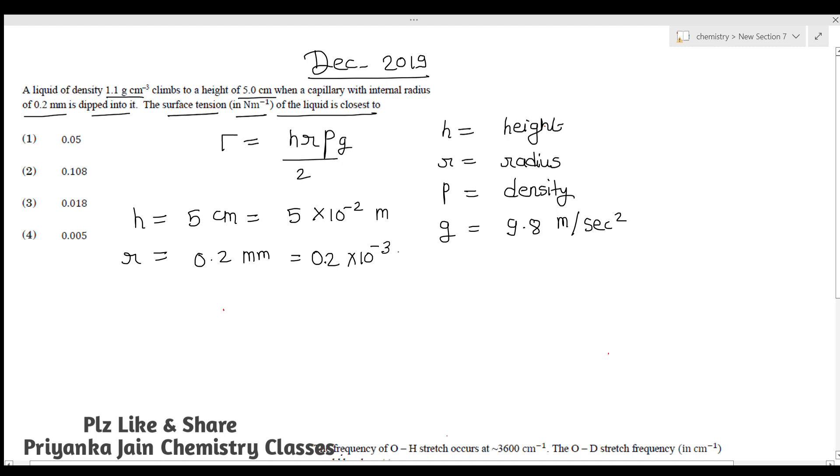Now we have ρ, which means density. Density is given as 1.1 g/cm³. You have to convert it to kg/m³, so multiply by 10³. It will now be 1.1 × 10³ kg/m³.